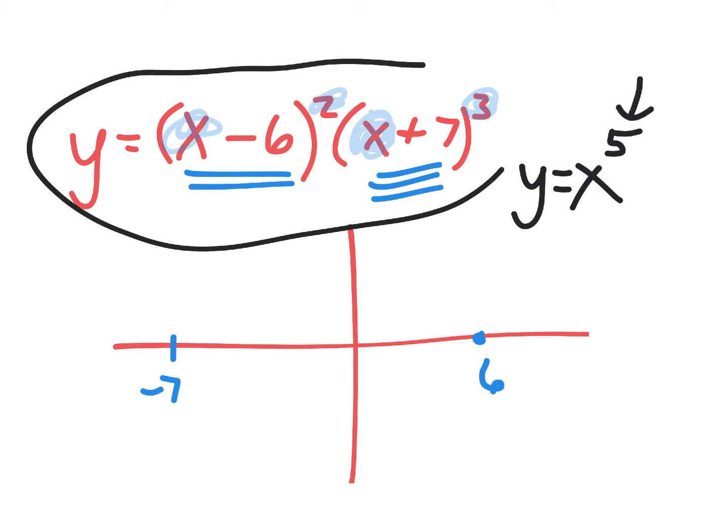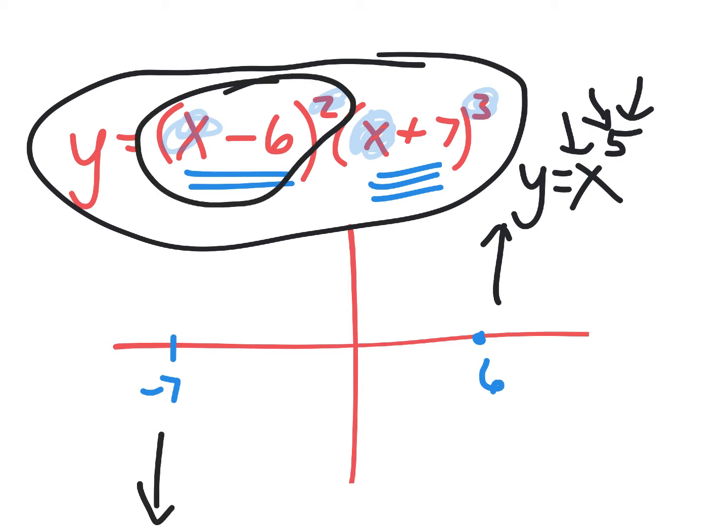all put together into y equals x to the fifth. Why is that so important? It tells you the degree. Notice, look at this. I don't even see a five in here. It tells you the degree. It tells you that there's no negative in the front, so it's up on the right. It tells you that since this is odd, that it'll be opposite direction on the left. And it's a bounce at the six. Boing. And it's a snake at the seven.